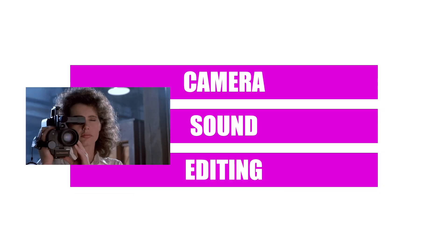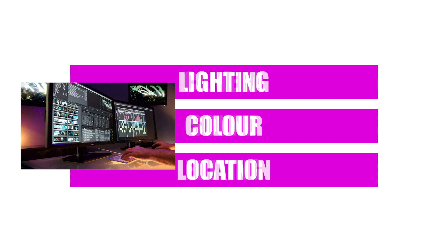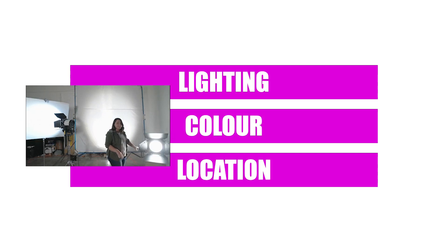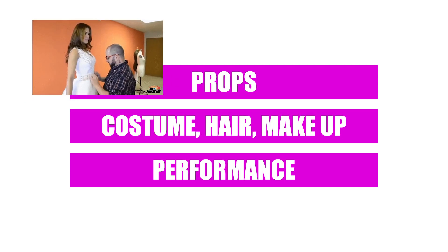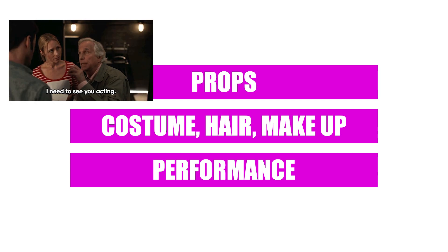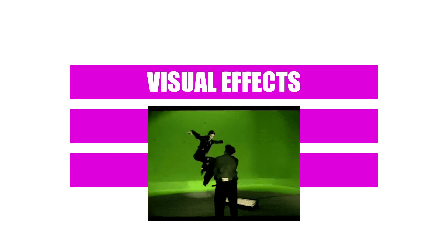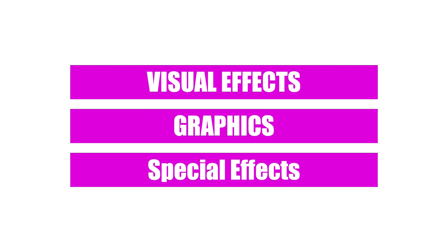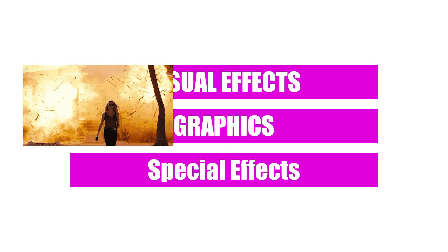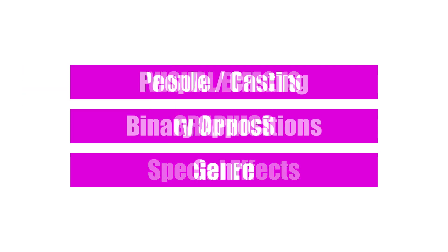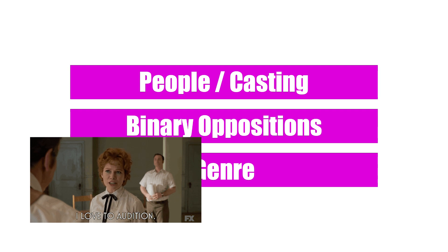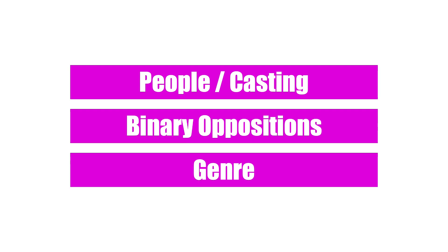So ideally in a minute or two you need to get these things listed on your grid: camera, sound, editing, lighting, colour, location, props, costume, hair and makeup, the performance of actors or people or gesture codes, visual effects (effects done on a computer afterwards), graphics, special effects such as explosions or stunt work done live on location, who has been cast or are they real celebrities, binary oppositions, and genre.